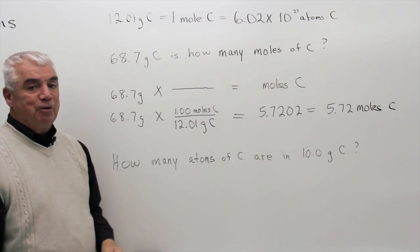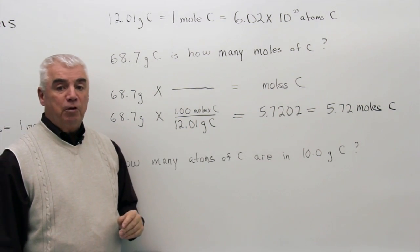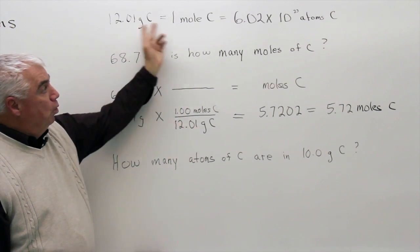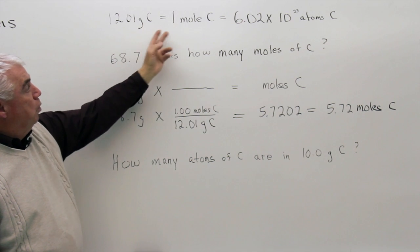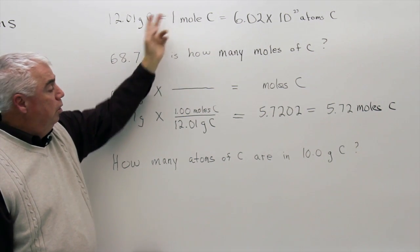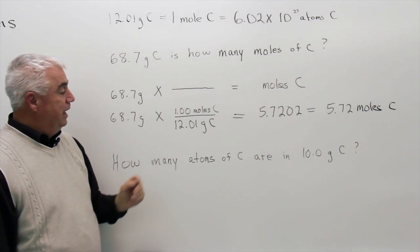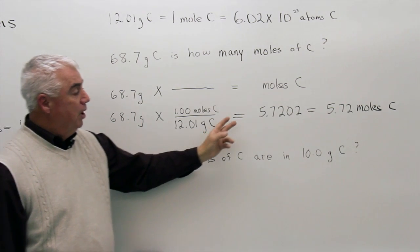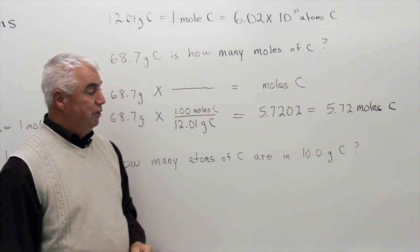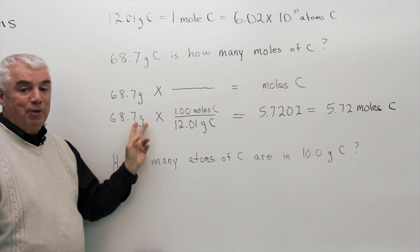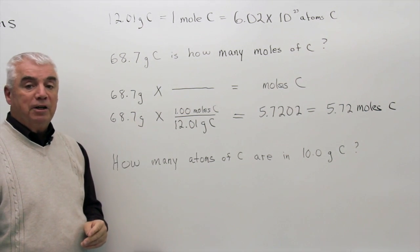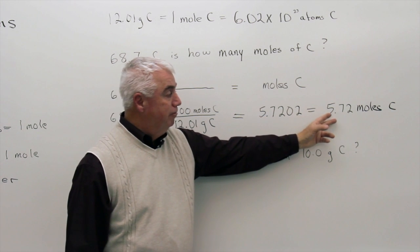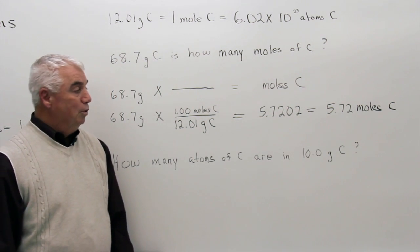The theory is — and it works very well — that if we set up the problem so the unit comes out right, the number will be right also. We get these numbers from the mole concept: the number associated with moles is exactly 1.0 moles, and 12.01 grams of carbon. When we multiply and divide, we get 5.7202. There's one more step: we need to round to the correct number of significant figures. We have three, three, and four, so three significant figures is what we need — 5.72 moles of carbon.